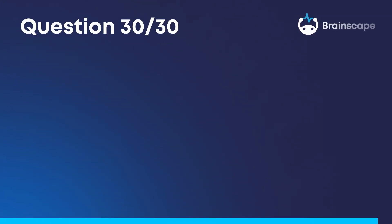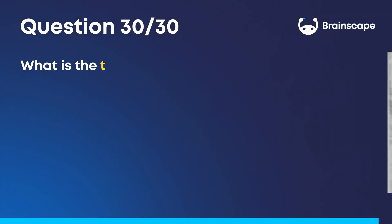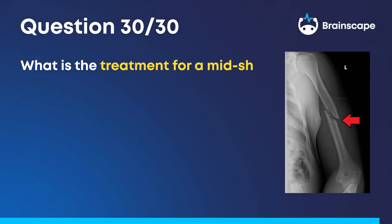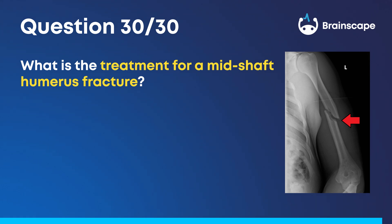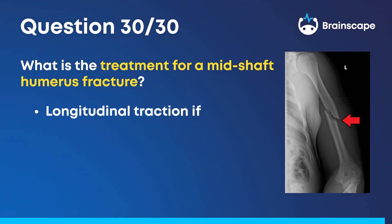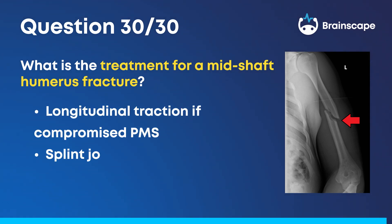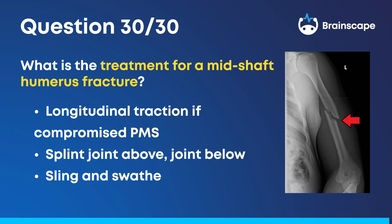Question 30. What is the treatment for a mid-shaft humerus fracture? Longitudinal traction if there is a compromised PMS. Splint the joint above and the joint below, and sling and swathe the arm to the chest.